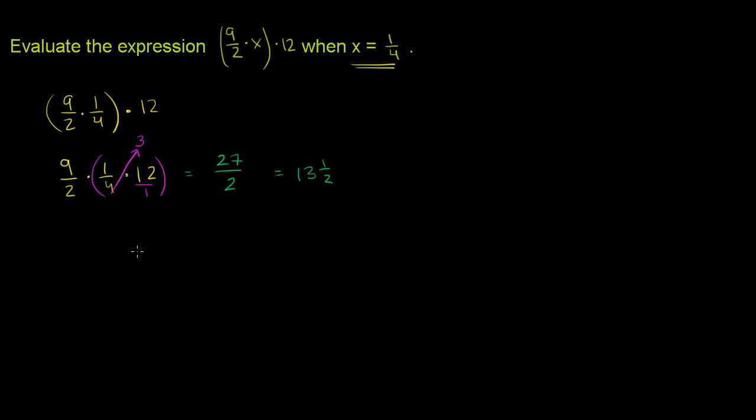Just to show you that it is the same thing as if we just evaluated it this way, let's do it that way as well. So if you did the 9 halves times the 1 fourth first, we would have gotten 9 over 2 times 4 is 8. We would have gotten 9 eighths here. And then we would have had to multiply that times 12.